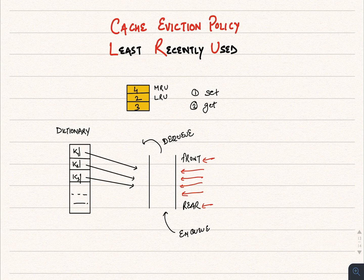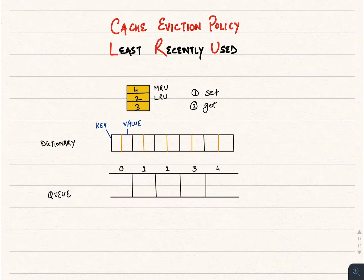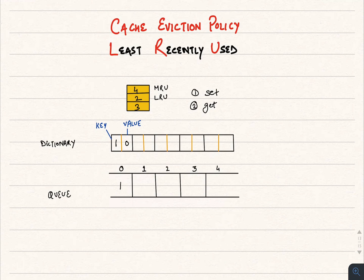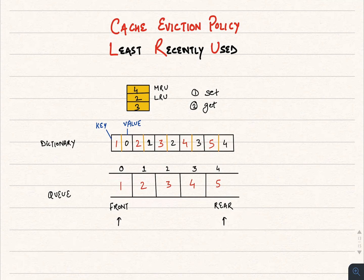This idea seems fine, but there is a problem with it. Consider a cache implemented using a queue and dictionary of capacity 5. CPU needs page 1 — it looks in dictionary and doesn't find it, which is a GET operation taking constant time. As it is a new page, it enqueues it into the queue and adds it to dictionary with key as page number and value as the queue index, which is a SET operation also taking constant time. One by one we keep getting new pages and enqueue them. Page 1 is least recent and page 5 is most recent. Now if CPU needs page 3, it finds it in cache in constant time using the dictionary and page 3 becomes the most recent.